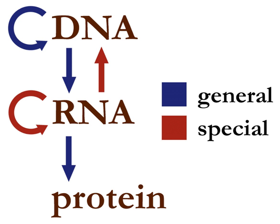The dogma classes these into three groups of three: three general transfers believed to occur normally in most cells, three special transfers known to occur only under specific conditions in the case of some viruses or in a laboratory, and three unknown transfers believed never to occur. The general transfers describe the normal flow of biological information: DNA can be copied to DNA, DNA information can be copied into mRNA, and proteins can be synthesized using the information in mRNA.